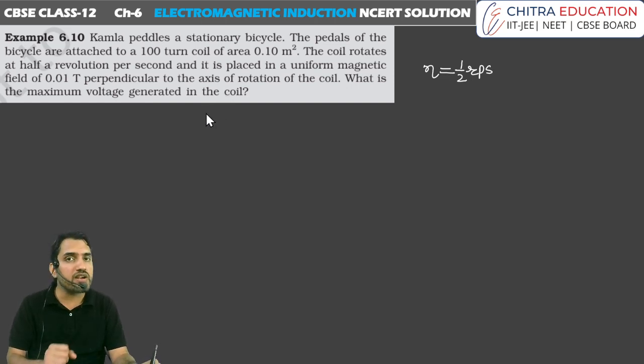If we look at EMF, the maximum EMF formula is EMF = NBA×omega. N here is total number of turns, B is magnetic field, A is area of cross section, and omega here is angular speed.